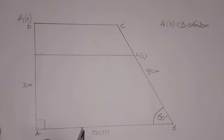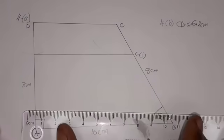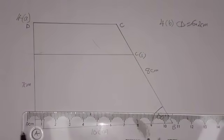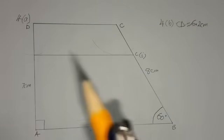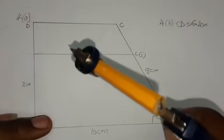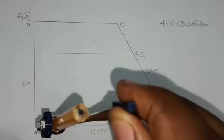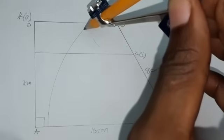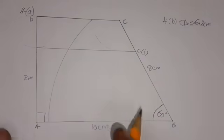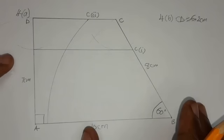The second part of C says: draw a locus of points which are 9 centimeters from B. Get your ruler and compass, measure 9 centimeters from 0. Put your compass at B and make an arc within the trapezium — not outside. This arc is labelled CII, the second part of question C.